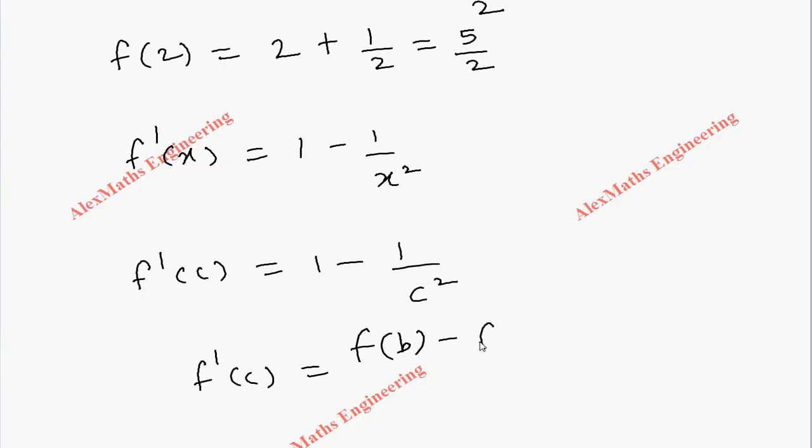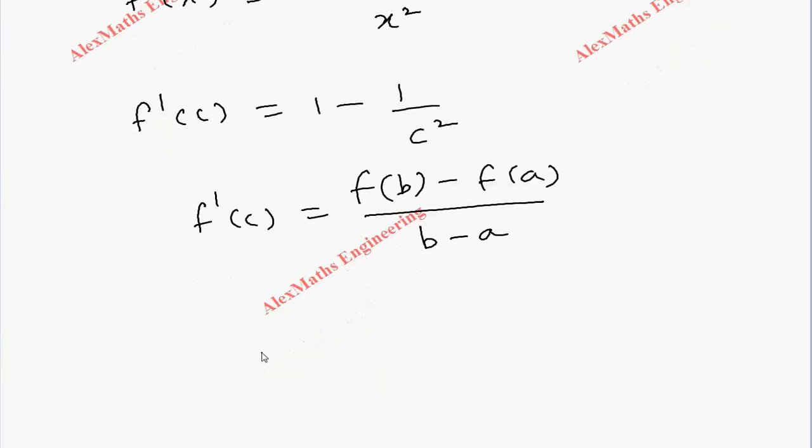According to the mean value theorem, f'(c) = [f(b) - f(a)] / (b - a). So we have f(2) - f(1/2) divided by 2 - 1/2.